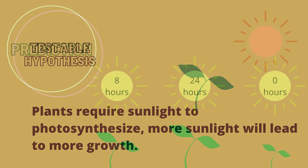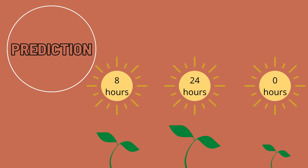A prediction may sound like an if-then statement. For example, if I expose some of my plants to no light, some of my plants to 8 hours of light a day, and some of my plants to constant light, then the plants getting more light will grow more.